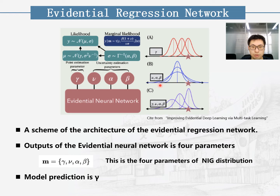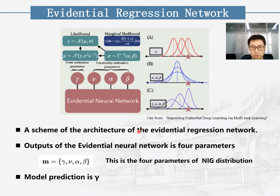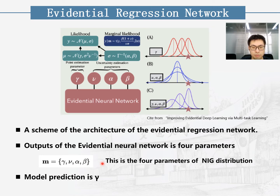Let me introduce the evidential regression network. This is a schematic of the architecture of the evidential regression network. On the left is an overview of the architecture. The evidential regression network can output the conjugate prior distribution — that is, the Normal-Inverse-Gamma distribution — with simplified examples of rows of the outputs. The model prediction is composed of four parameters of the NIG distribution: gamma, nu, alpha, and beta, where the model's prediction is gamma.